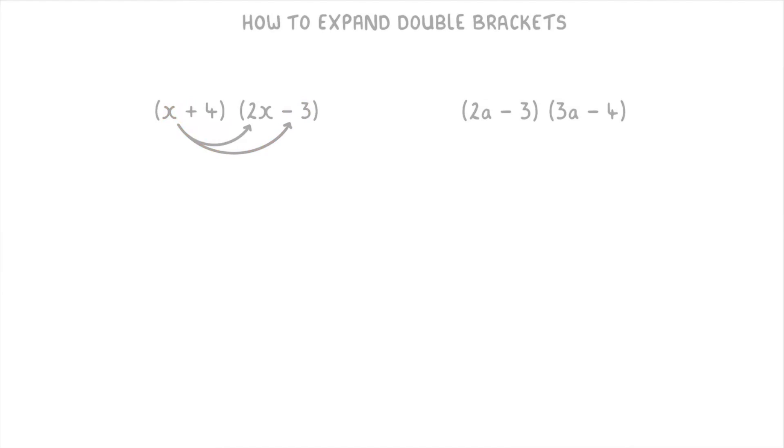Next, you can do the same thing for the second term of the first bracket, which in this case is the 4. So again, multiply the 4 by the 2x and by the minus 3. Even in your exams, I'd recommend drawing these little arrows like this to indicate which things you're going to multiply together.